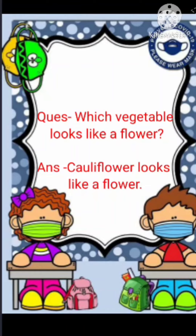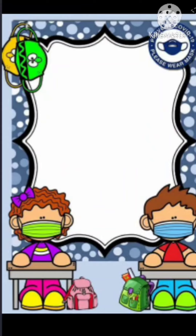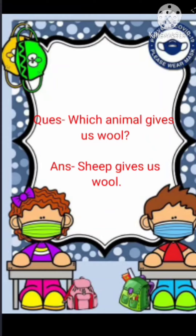The next question is: which vegetable has small balls in its cover? Answer: peas has small balls in its cover. Next question: which animal gives us wool? Answer: sheep gives us wool. So kids, learn these questions. Take care. Bye-bye.